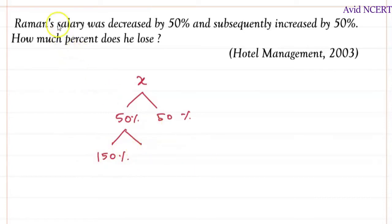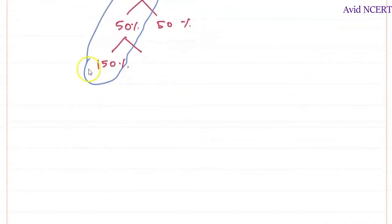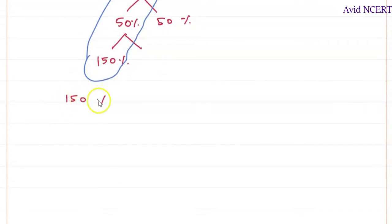So now to find this we have to go from reverse which is 150 percent of 50 percent of x. So which is 150 by 100 times 50 by 100 times x.